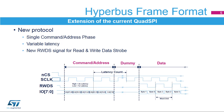The OctoSPI supports the new hyperbus mode, which combines the command and the addresses in a single initial phase. As with the regular frame format, hyperbus mode also uses a read qualifier and a write strobe during the data operation. The OctoSPI supports variable or fixed external memory latency, as defined by the hyperbus protocol specification.